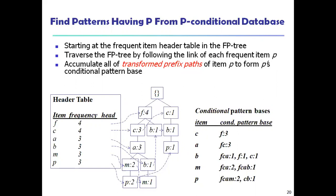Before going to conditional patterns, we trace the links first. Starting from the null root of the tree: F has value 4 and its link is given here. C takes its link from here. A takes its link from here. B is a header and takes its link from here. M takes its link from here, and similarly P takes its link from here. So first you make the header link to the particular item where it starts.